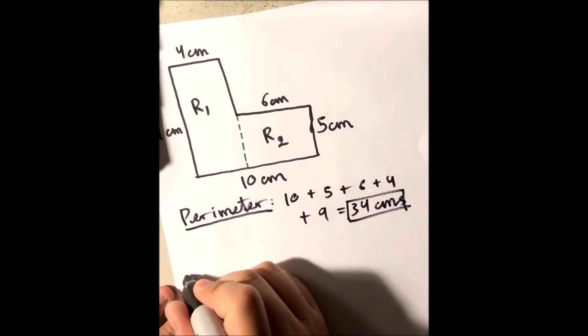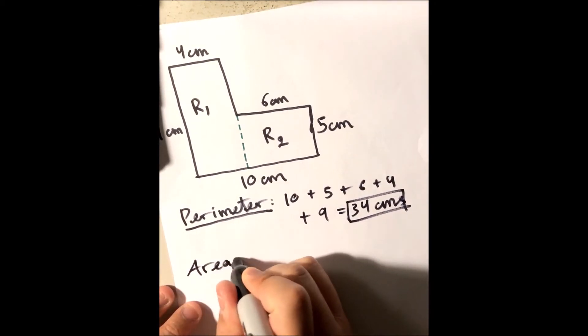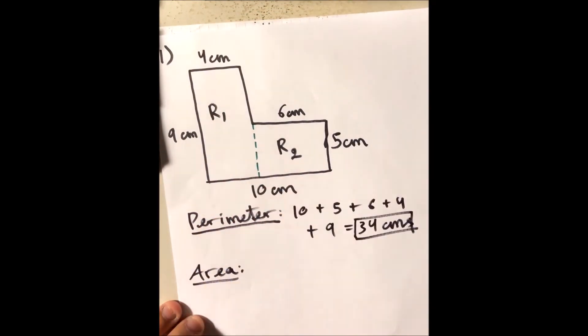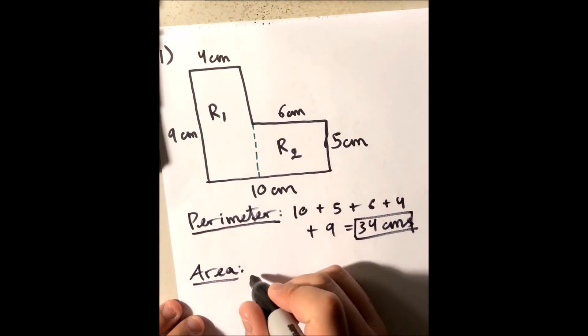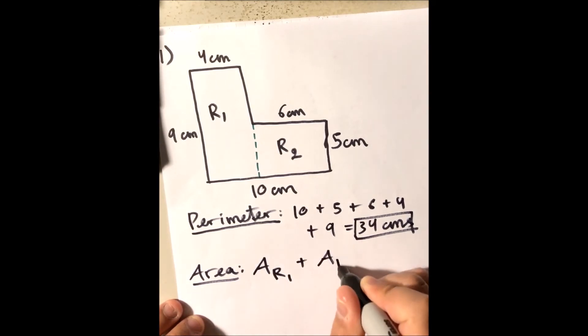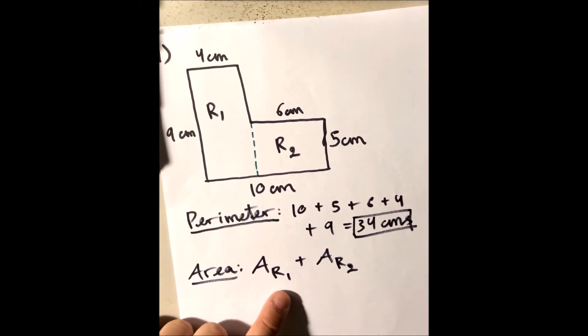Now what about the area? Well the area of this irregular shape is just gonna be the sum of the first rectangle and the second rectangle. So I'm gonna say capital A sub R1 plus capital A sub R2. Capital A stands for area and sub R1 means of rectangle 1 and area of rectangle 2.